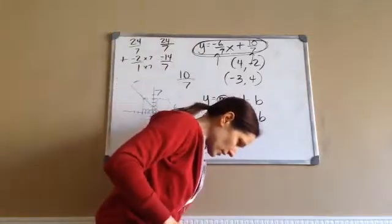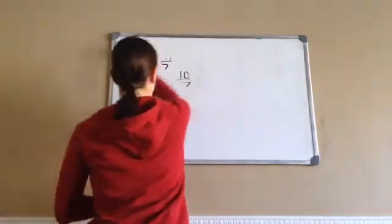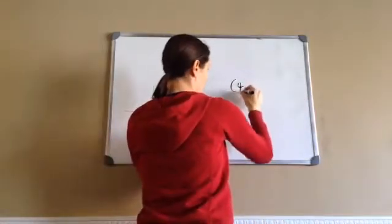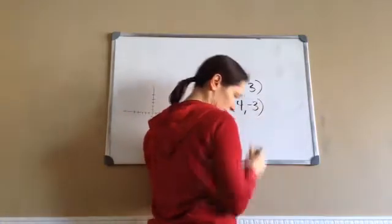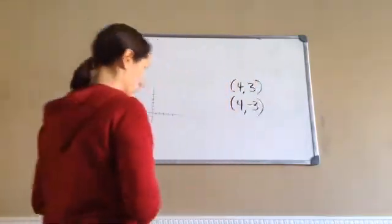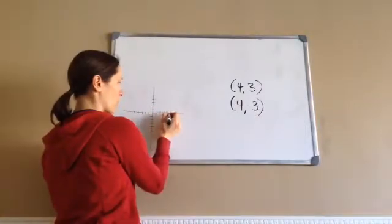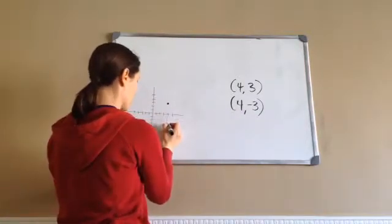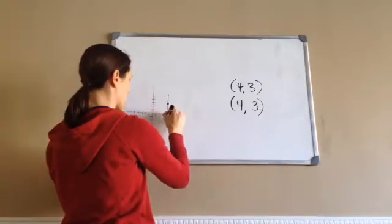All right. Last one. Find the equation of the line that passes through points 4, 3, and 4, negative 3. Now, you really need to pay attention on this one because you will see why in just a minute. So, I'm going to graph this for 1, 2, 3, 4, 3, and 4, negative 3. 1, 2, 3, 4, negative 3. Hopefully, you realized real quick we are not making a slanted line.